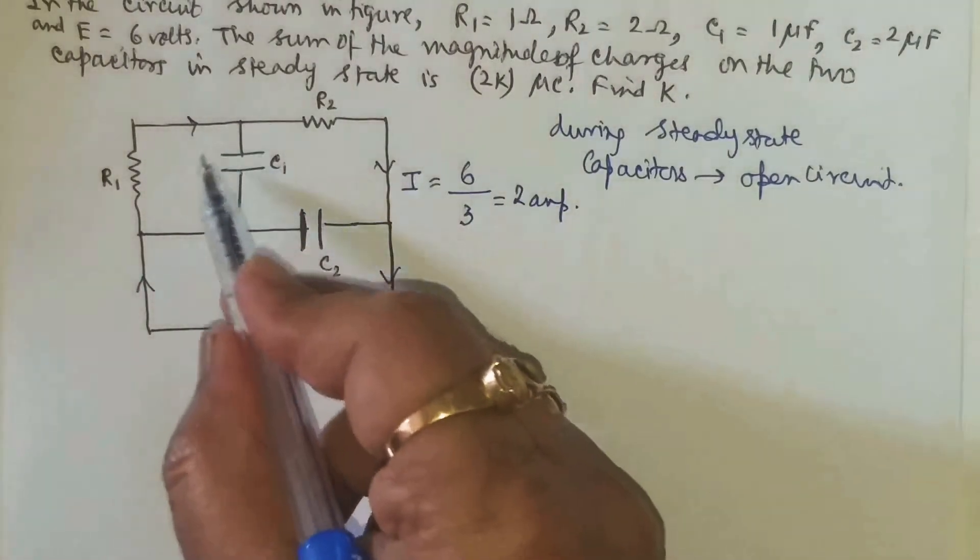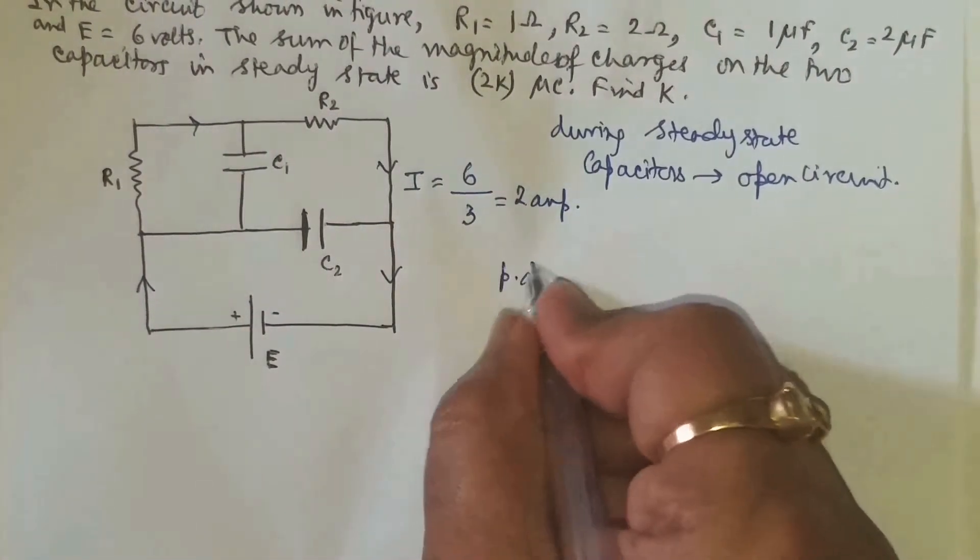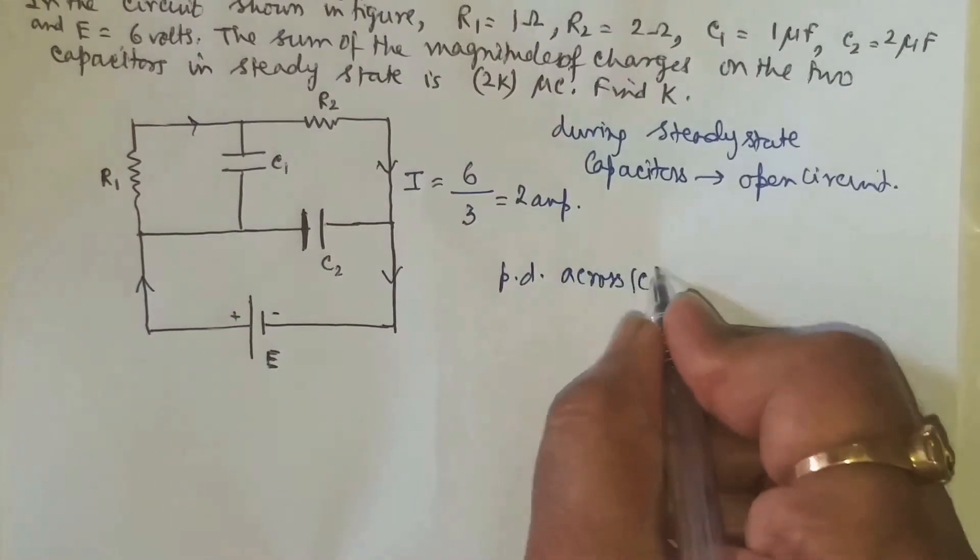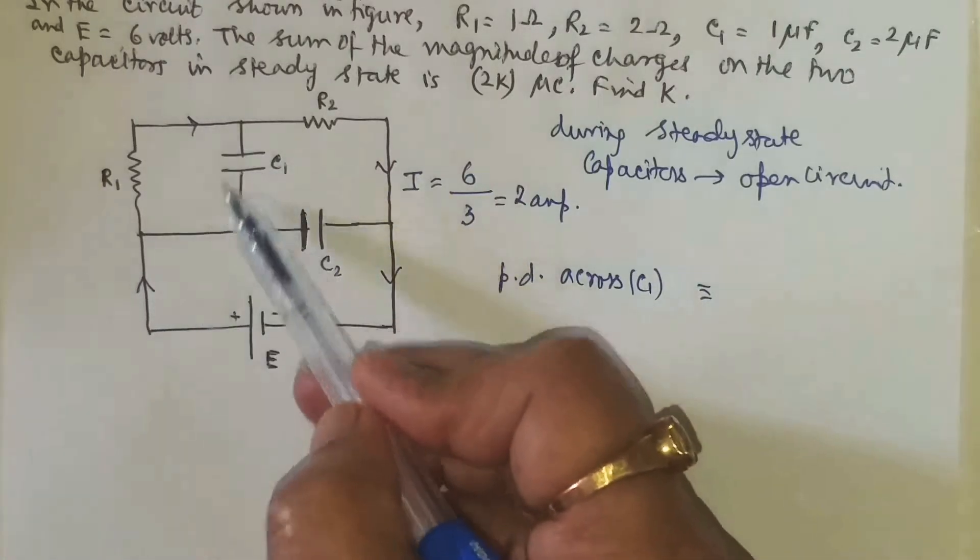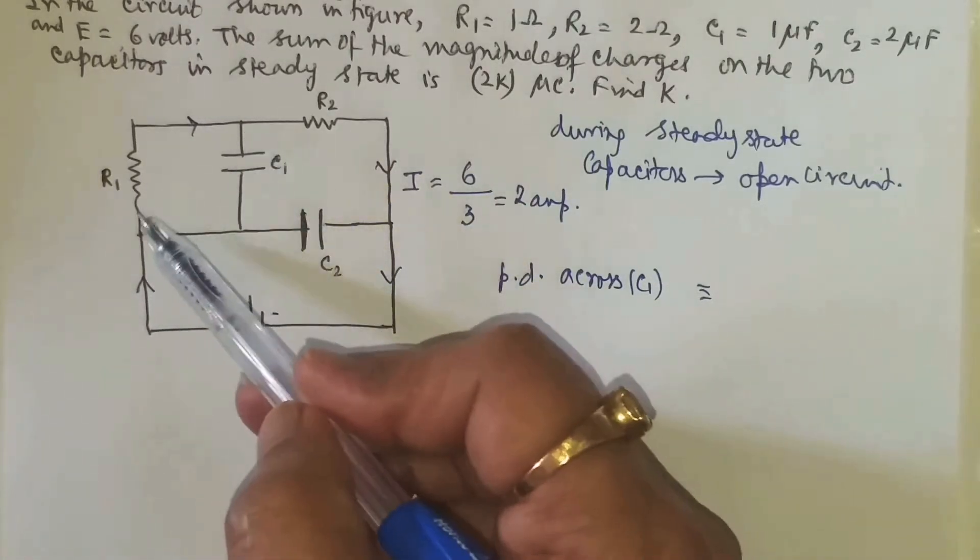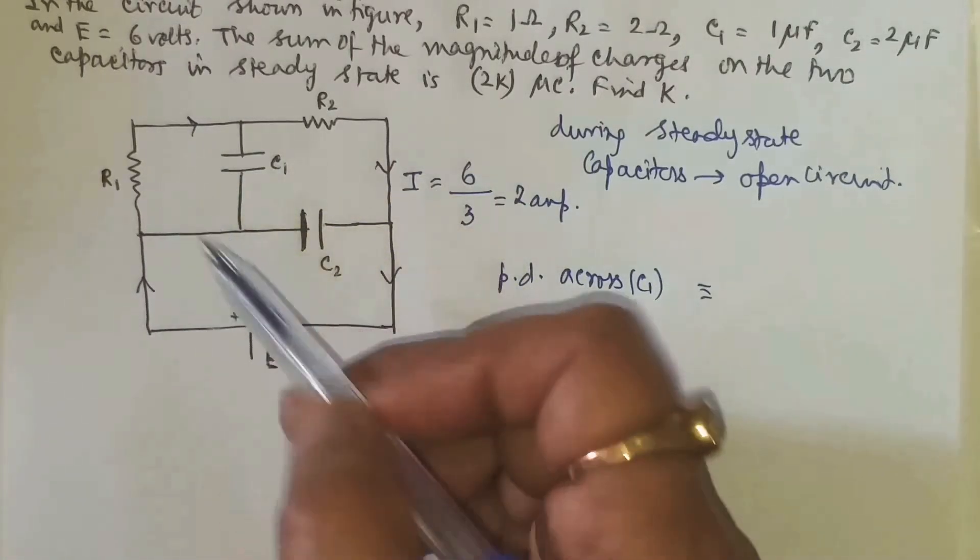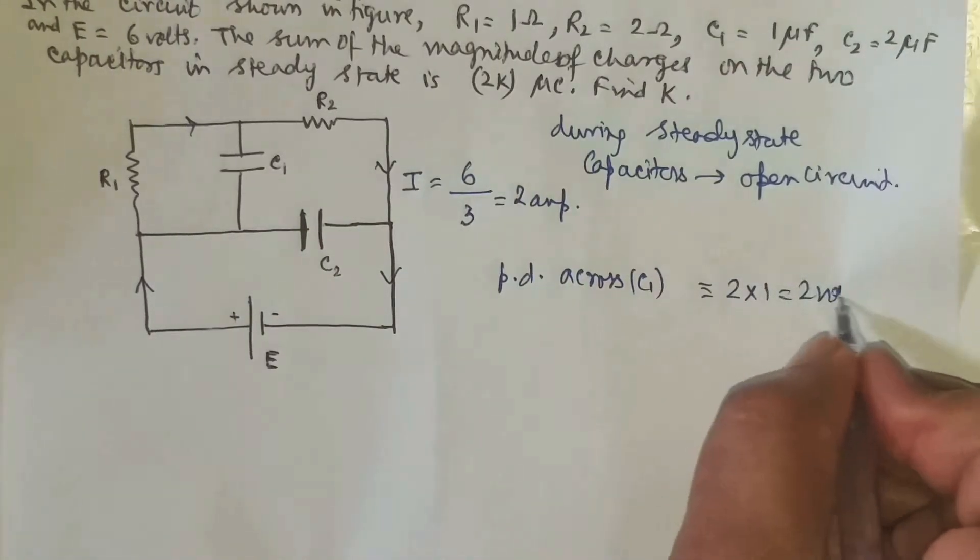Now what is the potential difference across C1? The potential difference across C1 will be equal to, it is connected directly across R1. So the potential difference across R1 will be current into resistance, that is 2 into 1, which is 2 volts.